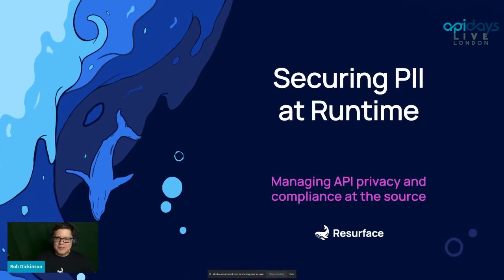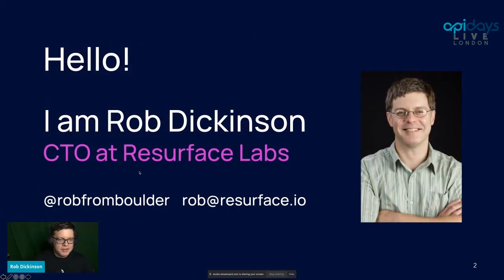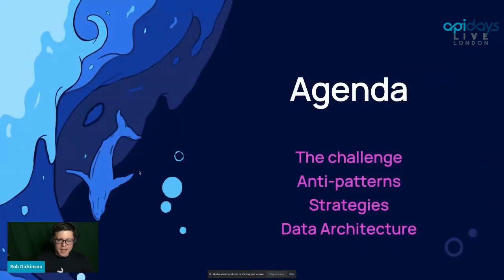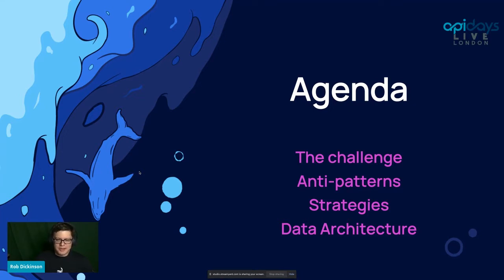Our topic for the day is securing PII at runtime — one of my personal favorite topics. This is an API-centric talk, so we're going to be looking at privacy and compliance at the source where that data is being created, at the API and microservices layer. I am Rob Dickinson, CTO at Resurface Labs, easy to find online. The agenda: we'll look at the challenge of storing PII, go through some anti-patterns and strategies, and end with a data architecture showing how to put those strategies into practice, using Resurface as an example.